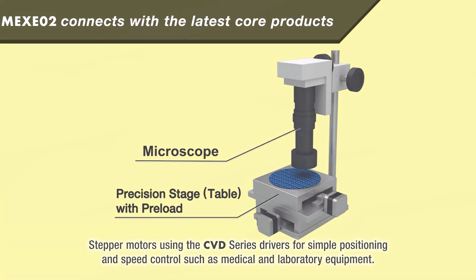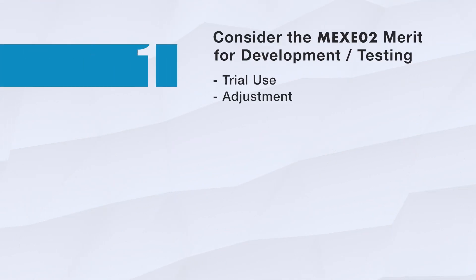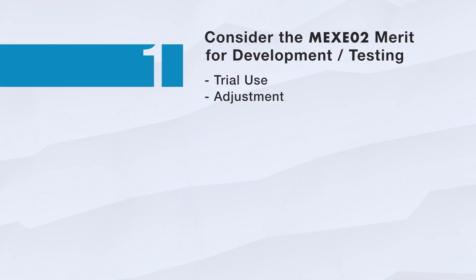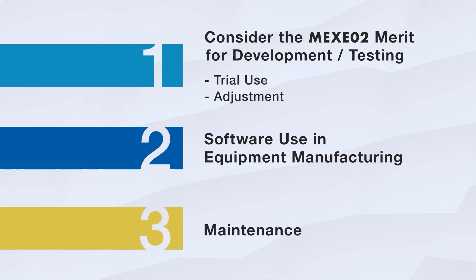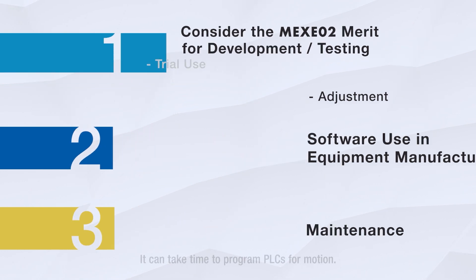Let's dive deeper and share the common advantages of the MEXE-02 support software. In development and testing, the MEXE-02 support software can be used for trial testing of the motion profile and for making simple tuning and adjustments. In manufacturing, it can be used to support setup and loading programs into the drivers. And finally, it can be used to troubleshoot or for maintenance processes once the machine is in the field.